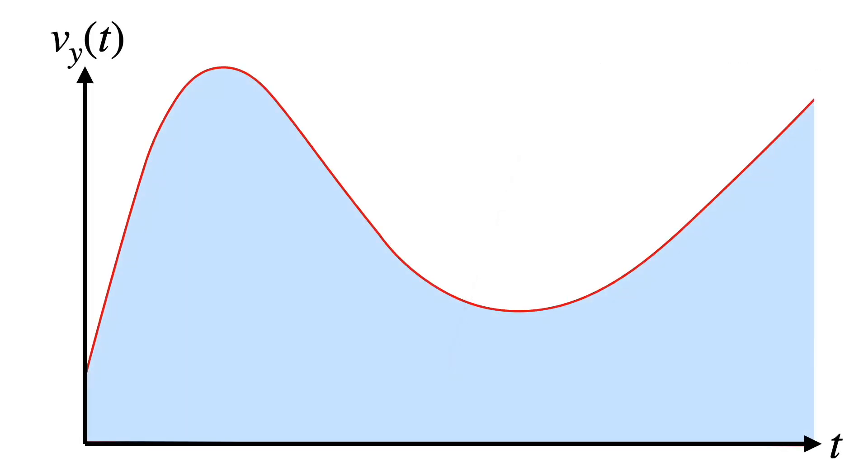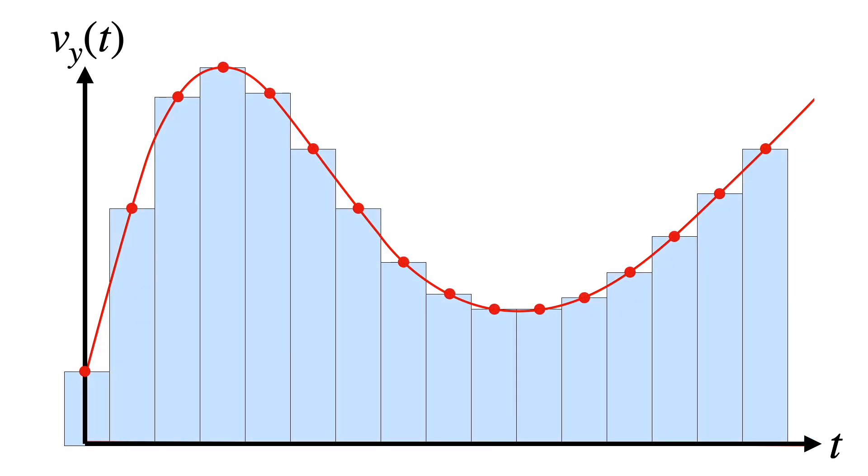But now suppose the velocity changes over time due, for example, to changing wind directions. It's harder to compute the area under this curve. One approach is to evaluate the curve at a few points and use a piecewise constant approximation for the integral.